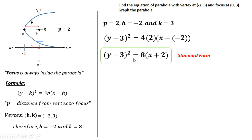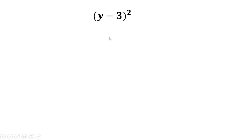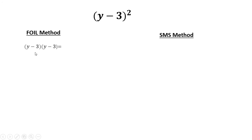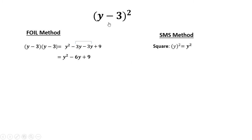First we need to expand (y - 3)². There are two ways: the FOIL method and the SMS method. In the FOIL method, you rewrite (y - 3) twice, then apply FOIL: y times y, y times negative 3, negative 3 times y, and negative 3 times negative 3. Combining like terms gives y² minus 6y plus 9.